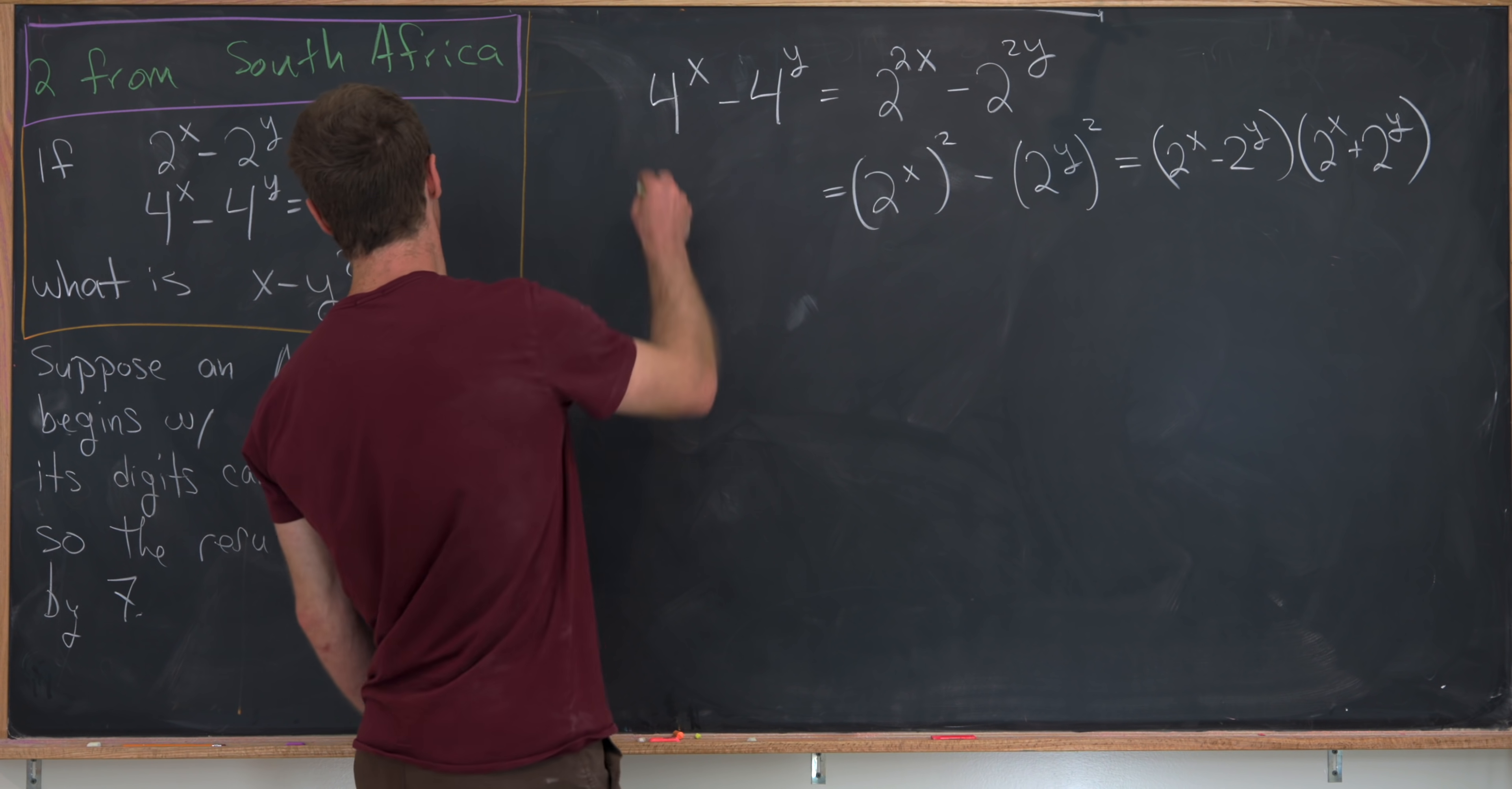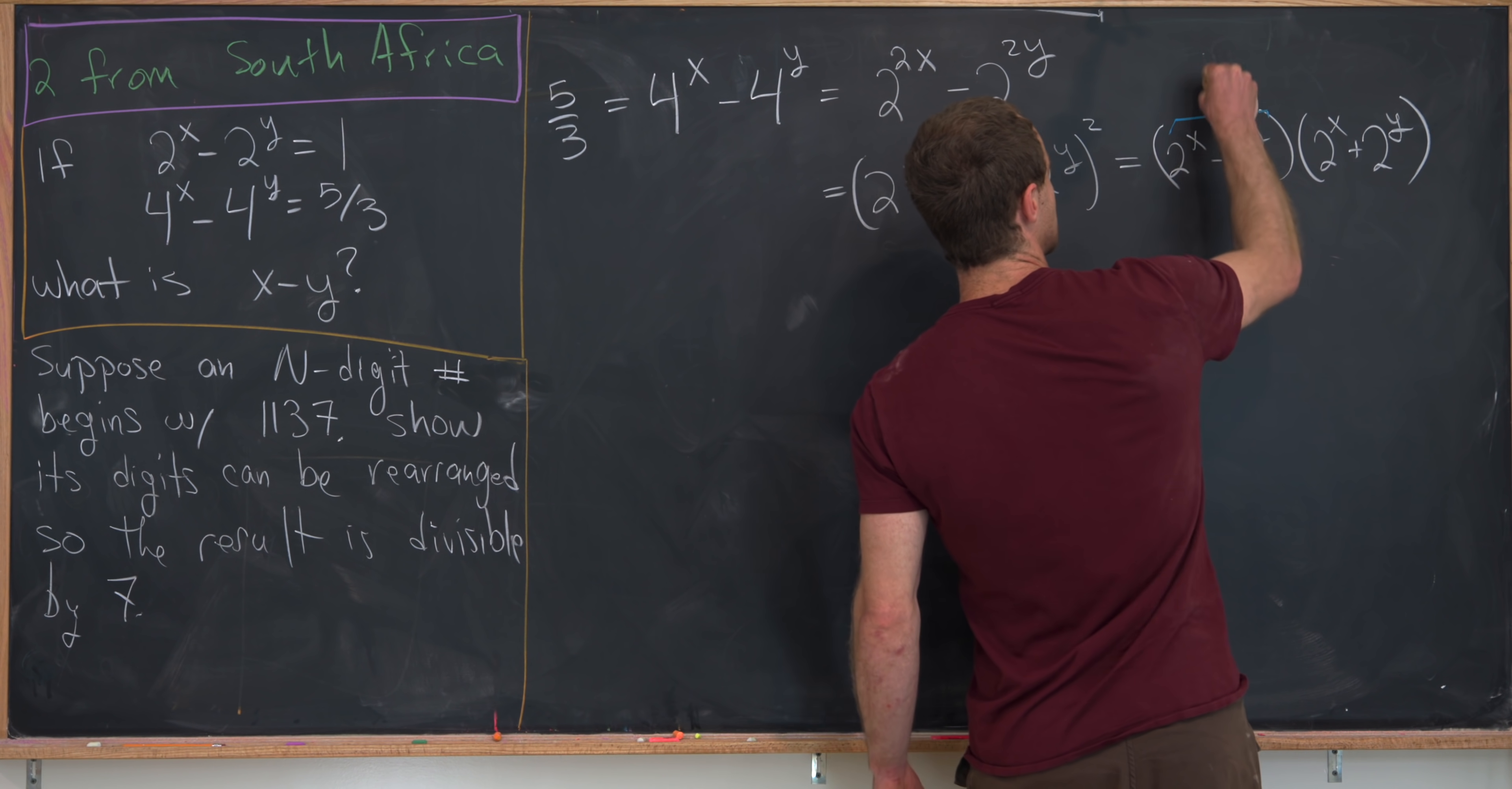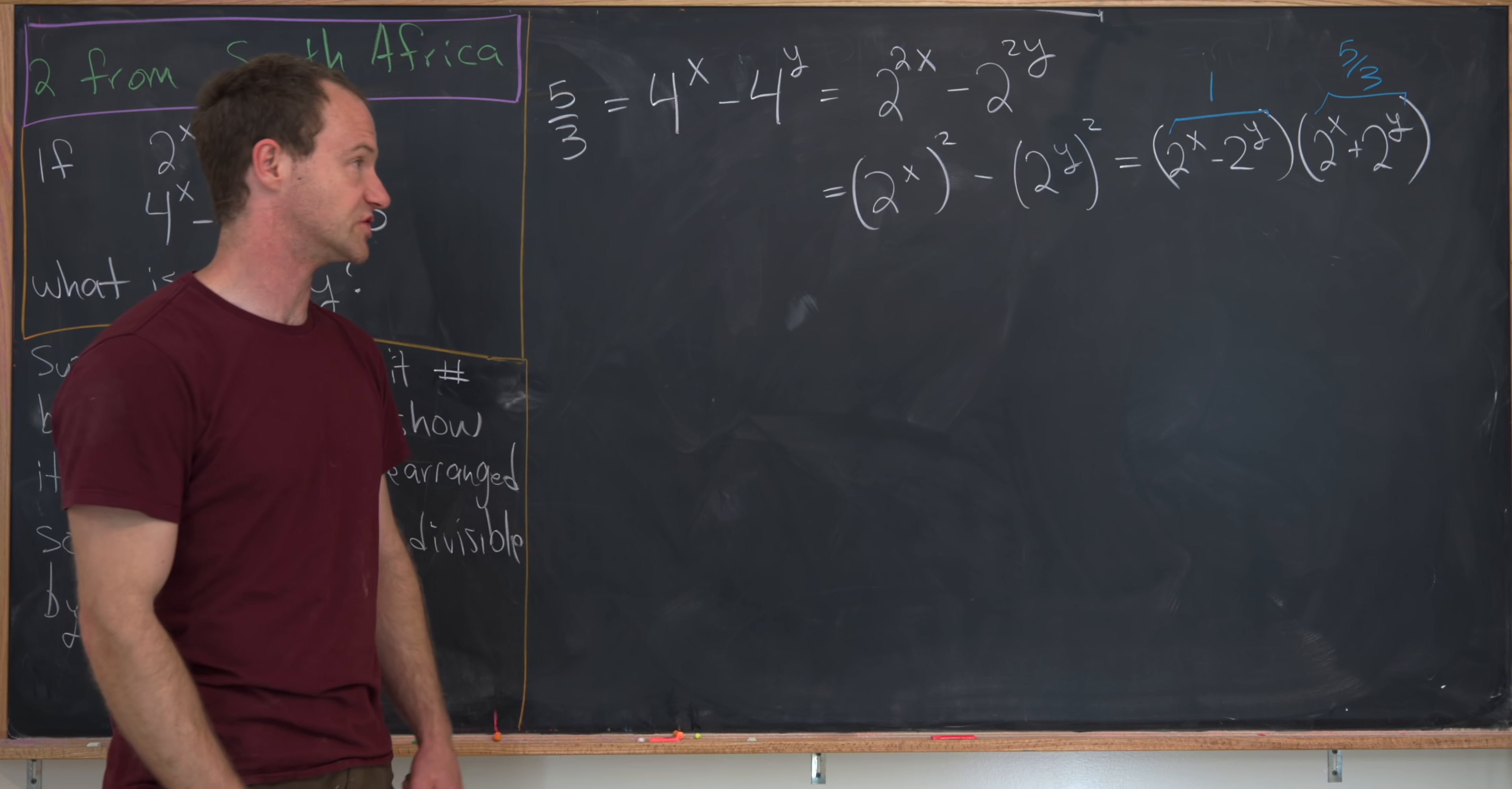Okay, so we know that this entire thing is equal to 5 thirds. And then we're given that this bit right here is equal to 1. So that tells us that this bit right here has to be equal to 5 thirds. So that gives us a maybe simpler system of equations to work with.